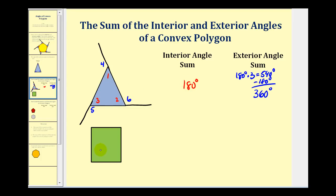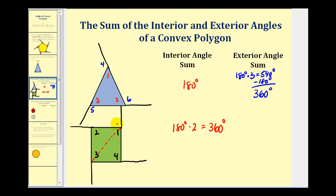For the interior angles of a quadrilateral, we're going to break up the interior into triangles, since we know the sum of the interior angles of a triangle is 180 degrees. There would be two triangles in the interior of a square, and therefore the sum of the interior angles would be 180 degrees times two, or 360 degrees. The interior and exterior angles make up four linear pairs, so the total sum would be 180 times four, or 720 degrees. Subtracting out 360 degrees leaves us with 360 degrees as the sum of the exterior angles.